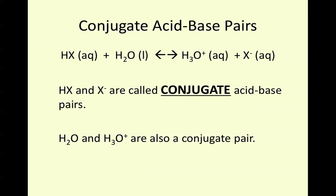Now, HX and X- are called conjugate acid-base pairs. So again, they differ by a single proton. H2O and H3O+, or hydronium, is also a conjugate pair, and they differ by the presence of a proton. So you can see here the ones in blue would be a conjugate acid-base pair, and the ones in red are another conjugate acid-base pair.